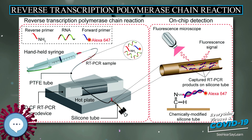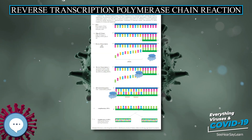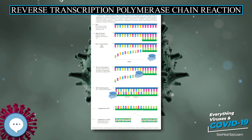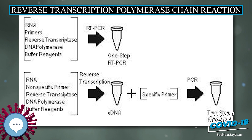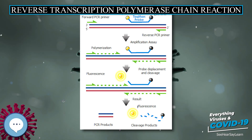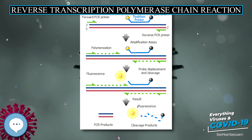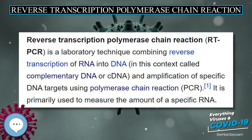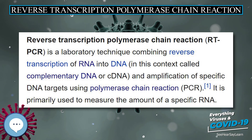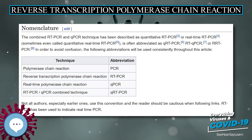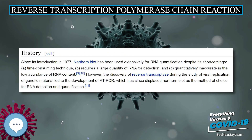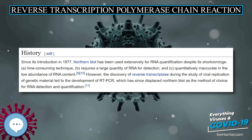Two strategies are commonly employed to quantify results obtained by real-time RT-PCR: the standard curve method and the comparative threshold method. RT-PCR's exponential amplification provides a highly sensitive technique in which a very low copy number of RNA molecules can be detected. RT-PCR is widely used in the diagnosis of genetic diseases and, semi-quantitatively, in the determination of the abundance of specific RNA molecules within a cell or tissue as a measure of gene expression.